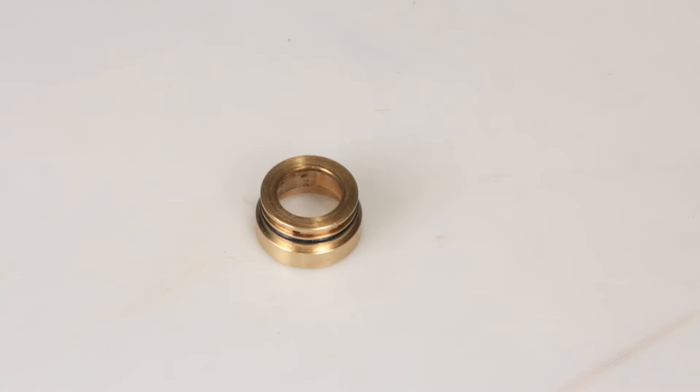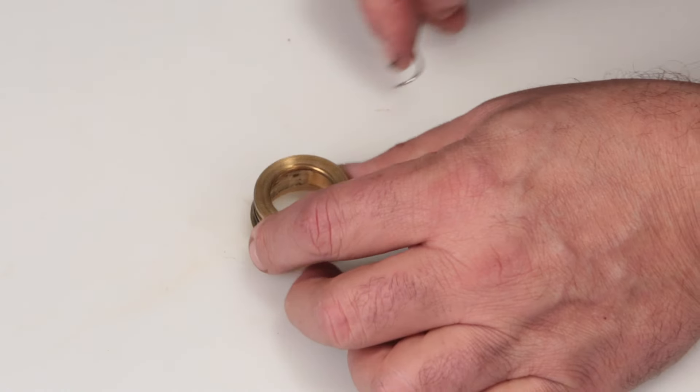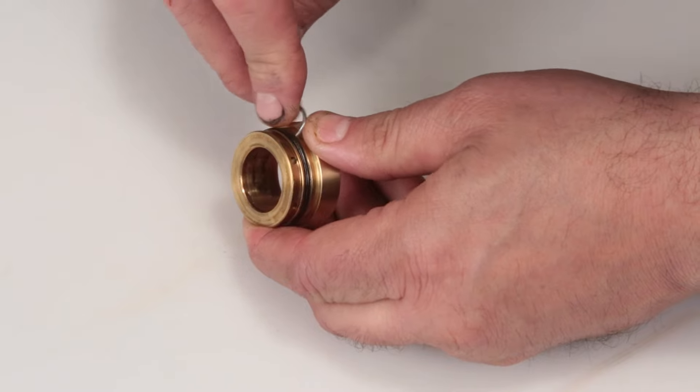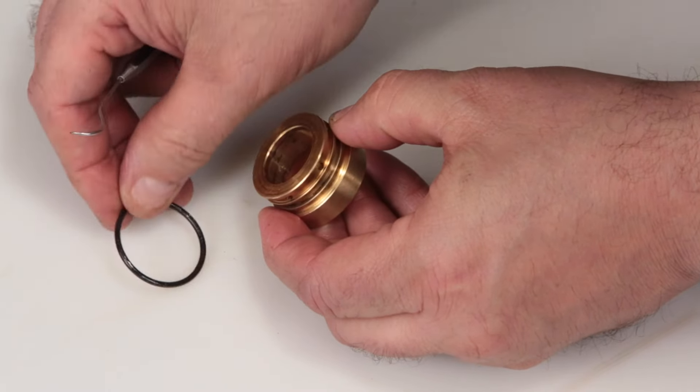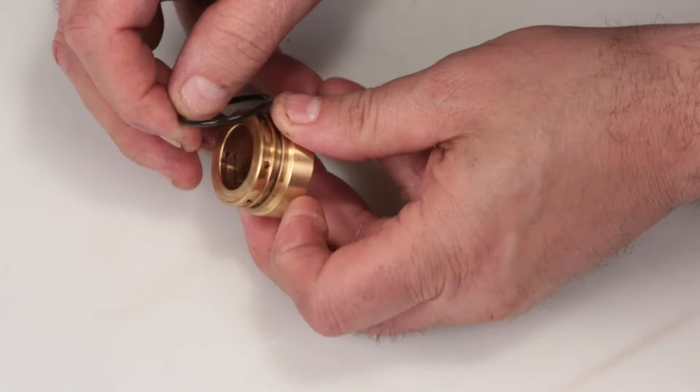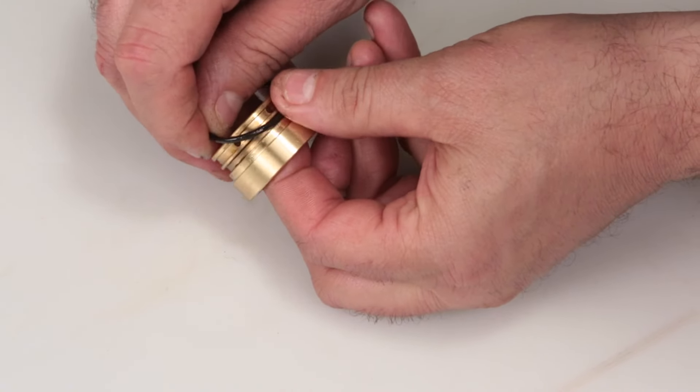Before installing the seal case, you must first replace the o-ring included in your seal kit. Using a small screwdriver or pick, reach under the o-ring and remove from the groove, then slide off the seal case. Replace with the new o-ring included in the seal kit.